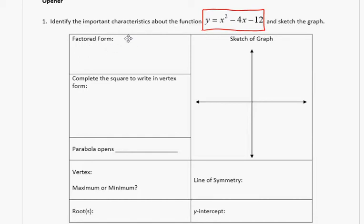So, if I want to factor x squared minus 4x minus 12, I'm going to need two numbers that multiply to negative 12 and add to negative 4. What's your numbers? x minus 6, x plus 2. x plus 2. Great.